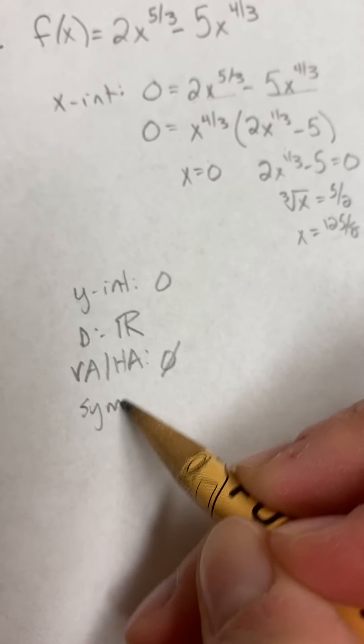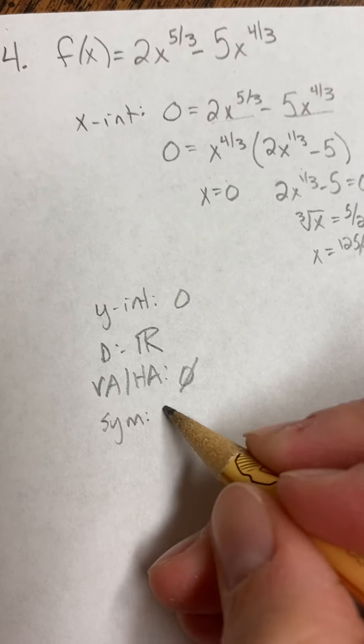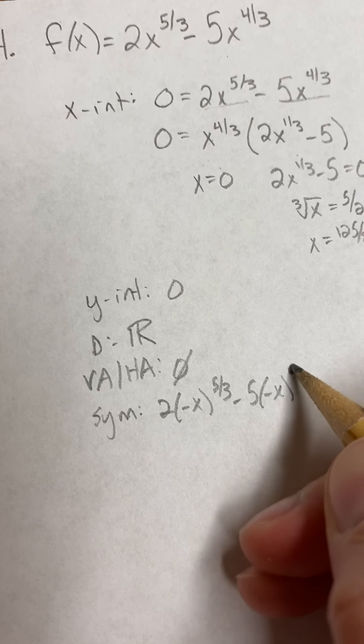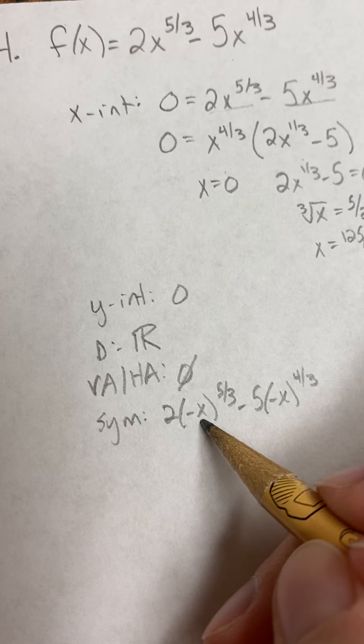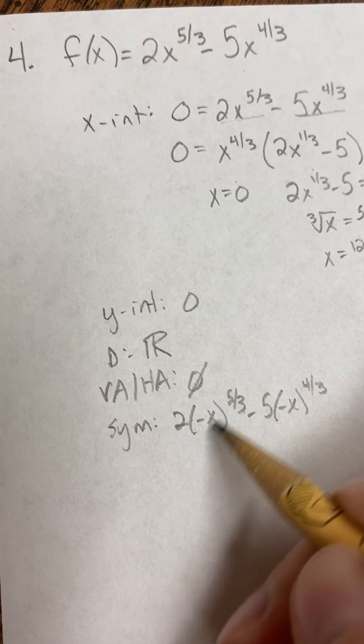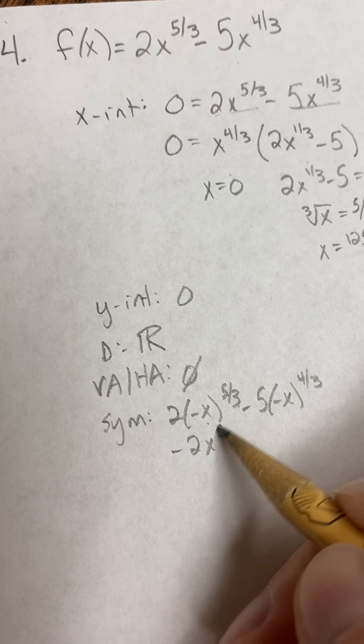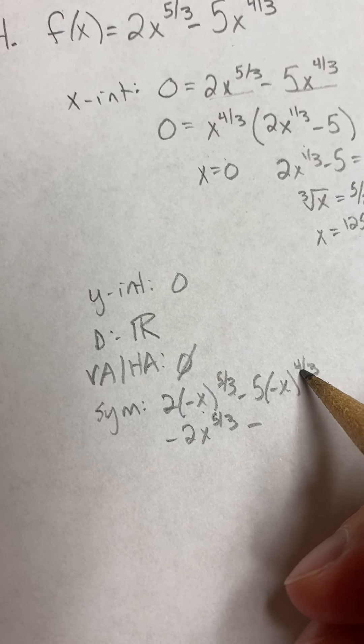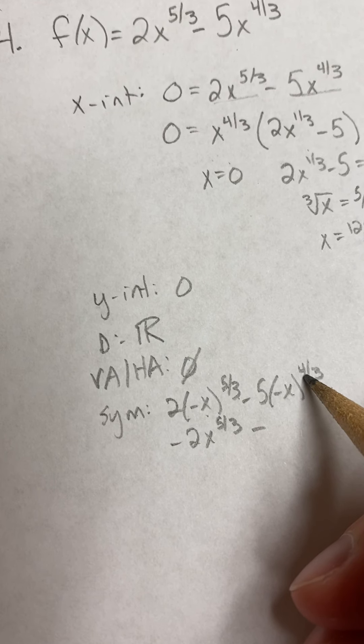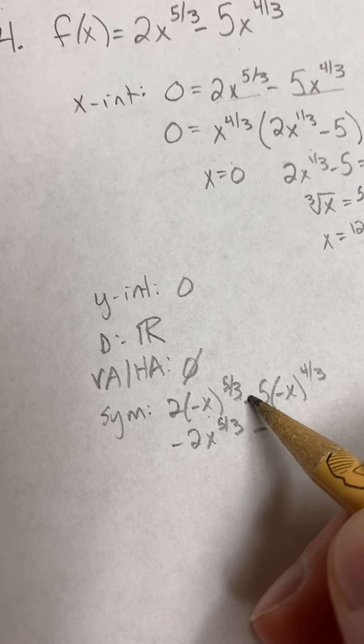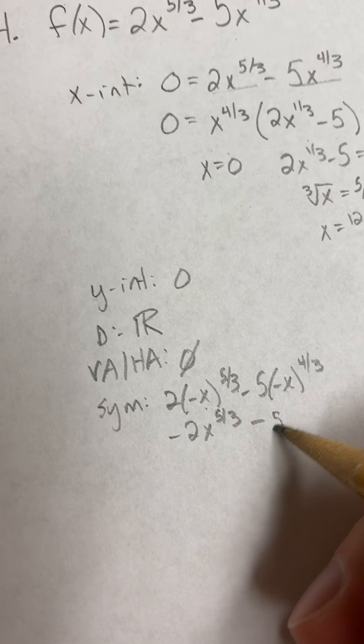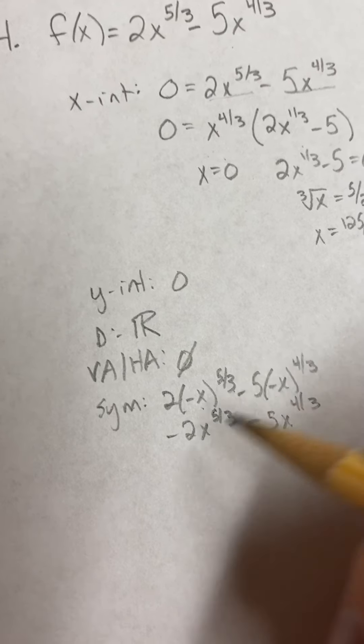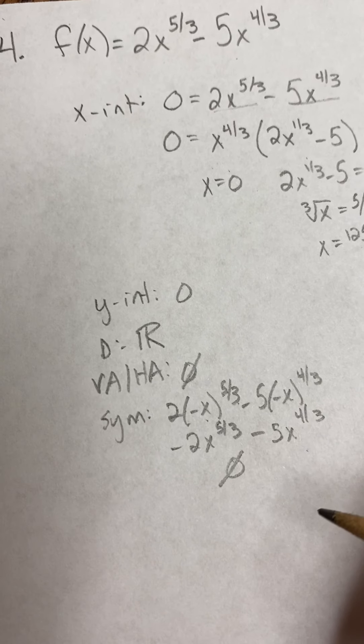Symmetry. If you plug in negative x, this term, you're taking the cube root and then to the fifth power. So that's going to remain negative. This one, you're taking the cube root and then the fourth power. So that's going to cause it to become positive. So this becomes a positive, but then you still have the negative 5. So you can see this is not the same thing you started with, nor is it the exact opposite. So we don't have any symmetry on this.